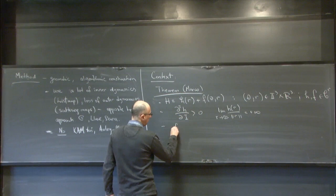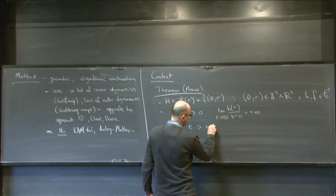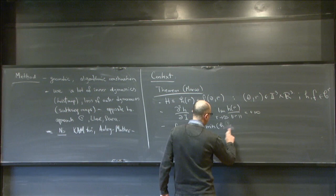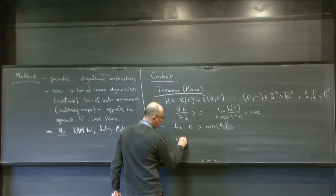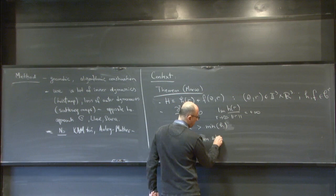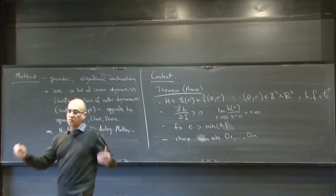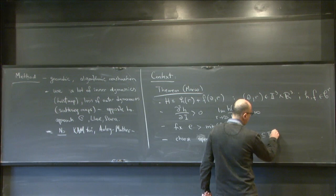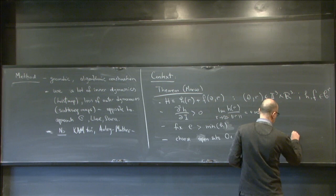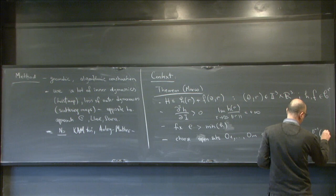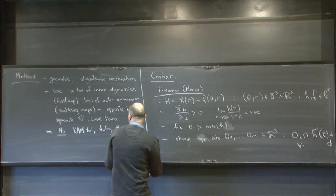You fix an energy which is bigger than the minimum of the energy level of the unperturbed system. You also choose a collection of open sets O1 through Om — let's say disjoint, or small enough. These are open sets in the action space that intersect the energy level, so O_i intersect H^{-1}(E) is non-empty for all i.